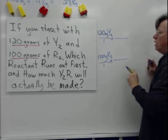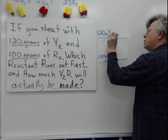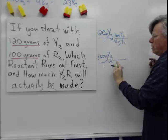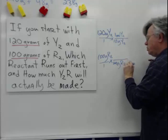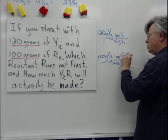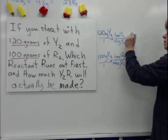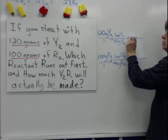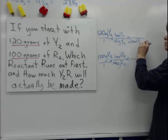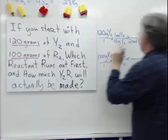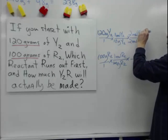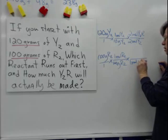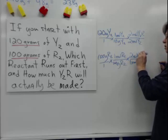To solve this type of problem, we run the same calculation twice in parallel — once for Y₂ and once for R₂. Converting to moles: 10 grams of Y₂ is one mole, and 14 grams of R₂ is one mole. Then applying the mole ratios from the balanced equation: 2 moles of Y₂ makes 2 moles of Y₂R, and 1 mole of R₂ makes 2 moles of Y₂R.